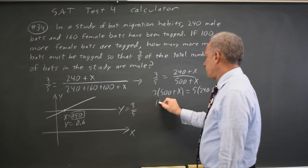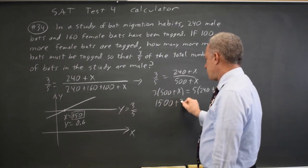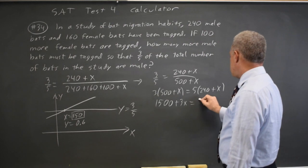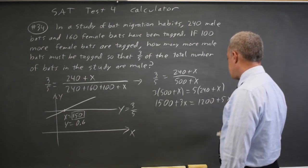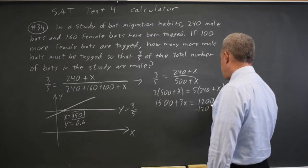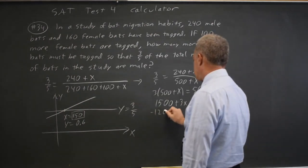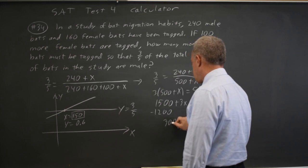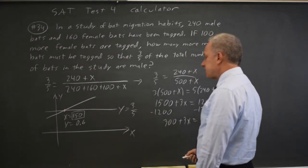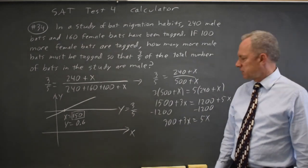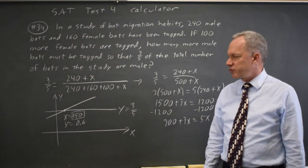So cross-multiply: 3 times 500 plus x equals 5 times 240 plus x. 1500 plus 3x equals 1200 plus 5x. Subtract 1200 from both sides, and I get 300 plus 3x equals 5x. And that's where I was before. Subtract 3x and I get 2x on the right. Divide by 2 and I get x equals 150.